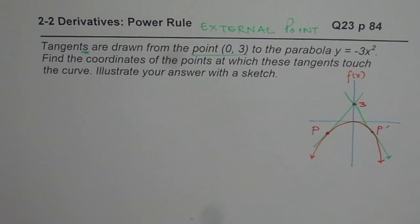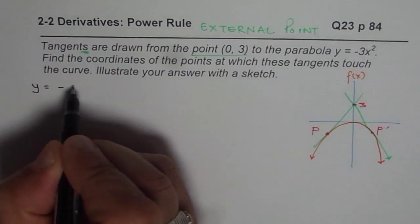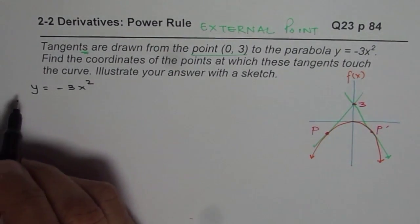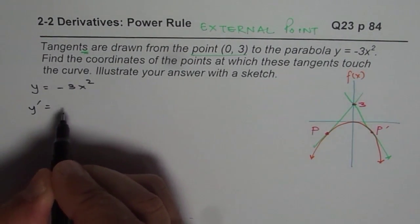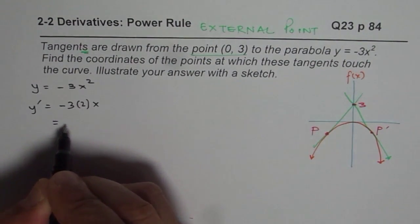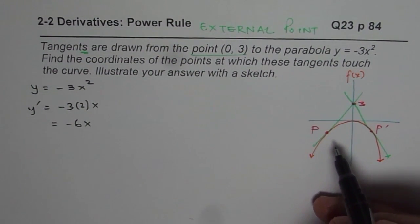Now let us see the strategy behind it. What we are given here is a function y = -3x². What is the slope of the tangent? Slope is y'. So y', in general, will be -3 times 2x, which equals -6x. So -6x is slope of any tangent line at any particular point.